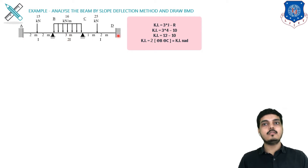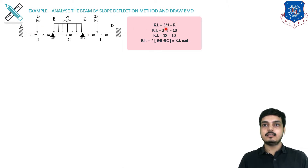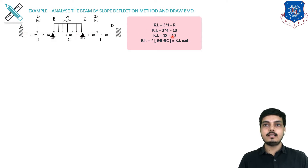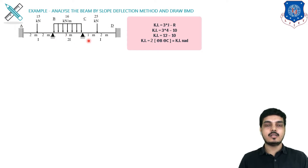First we find the number of unknowns using 3J − R. J is the number of joints: A, B, C, D — that's 4 joints, so 3 × 4 = 12. Reactions: both fixed ends give 3 + 3 = 6, plus 2 + 2 = 4, so 6 + 4 = 10. Thus 12 − 10 = 2 unknowns: theta B and theta C. We can also directly observe that A and D are simple supports, giving 2 unknown moments, so we must find those unknown values before applying the formulas.